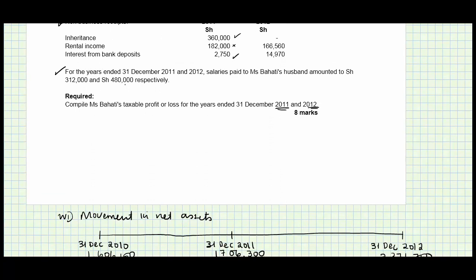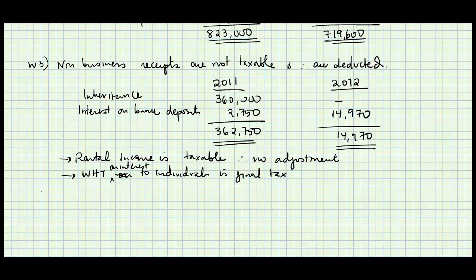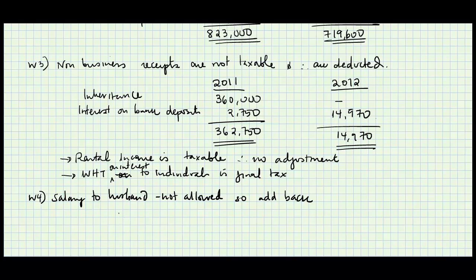Finally, for the years ended 31st December 2011 and 2012, salaries paid to the husband amounted to 312,000 and 480,000. These are not allowed, so we add them back — 312,000 in 2011 and 480,000 in 2012.